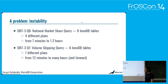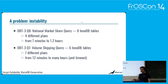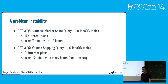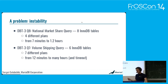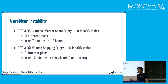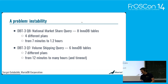Tests were done on DBT3 benchmarks, which are complex analytical queries. In a query called Q8, the National Market Share Query, which joins 18 InnoDB tables — by repeating the same query many times, I saw four different execution plans. The fastest was seven minutes, the longest was 1.2 hours. For Q7, which joins six InnoDB tables, it was even worse: seven different plans, fastest was 12 minutes, and the longest I aborted after many hours. So it's not good when you run a query and don't know how long it will take.